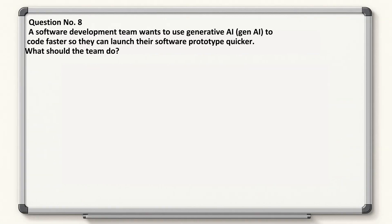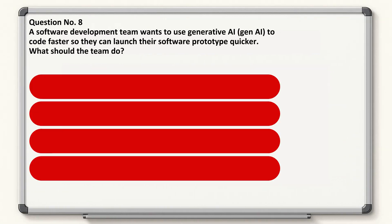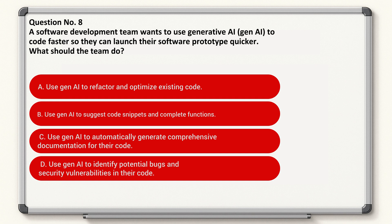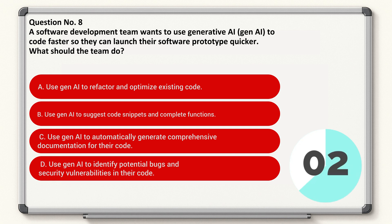Question number eight: a software development team wants to use Generative AI to code faster so they can launch their software prototype quicker. What should the team do? Correct answer is B.